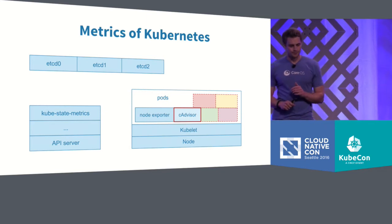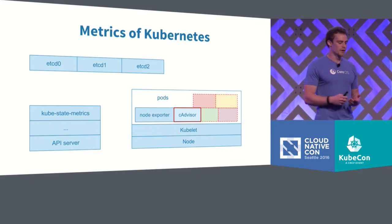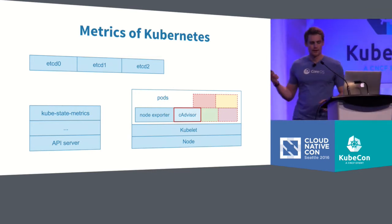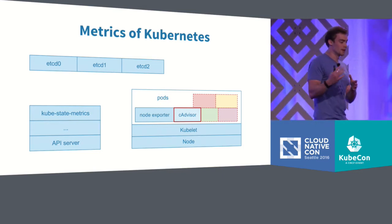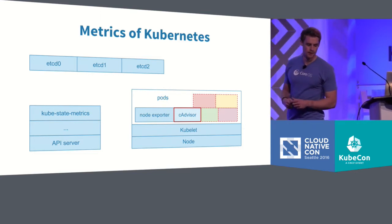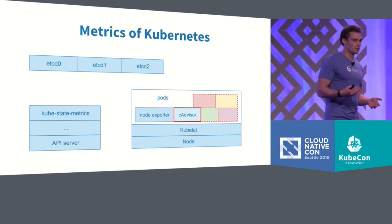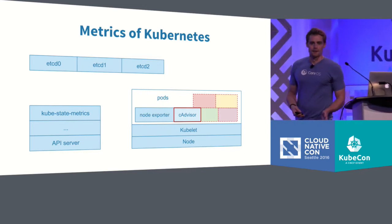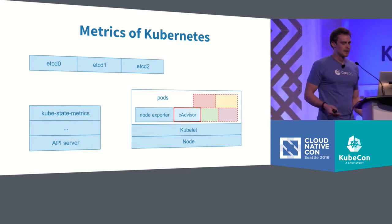And lastly we have cAdvisor, which is pretty much like the node exporter just at the container level — it gives you the same kind of metrics for every single container running in the entire infrastructure. If you combine all these together, it's actually quite a good picture of metrics for your entire cluster. And luckily, all these components already expose their metrics in the Prometheus format, simply because Kubernetes and etcd chose this format to expose their metrics. So we merely have to point Prometheus at every individual component and collect the metrics that are already available.